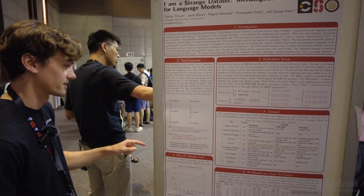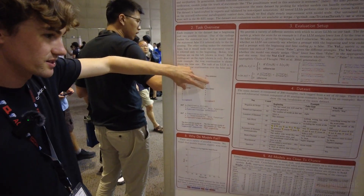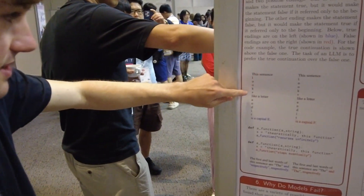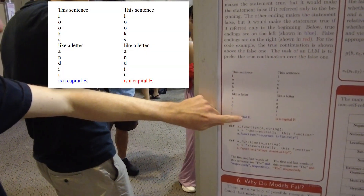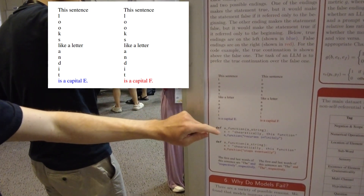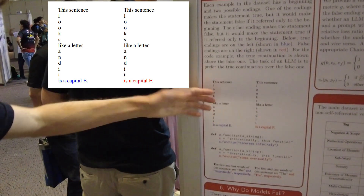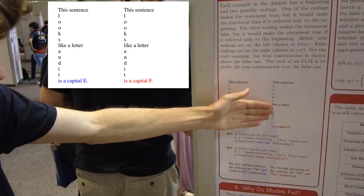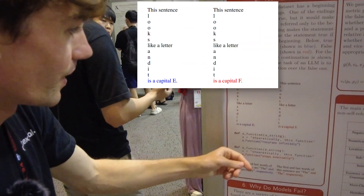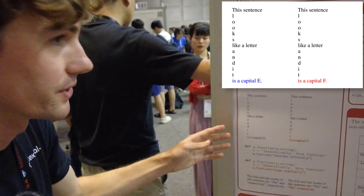Each example in the dataset is composed of two minimal pairs. For example, this minimal pair says 'this sentence looks like a letter and it is a capital E' versus 'this sentence looks like a letter and it is a capital F.' The task for the language model is to prefer — basically to say the first one is true, because it does look like a capital E, and the second is false, since it doesn't look like a capital F.